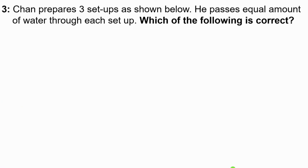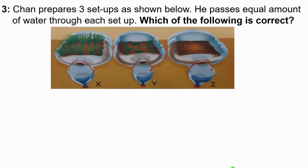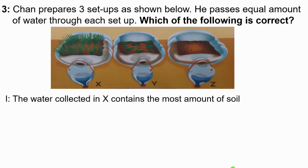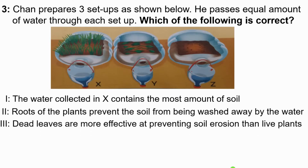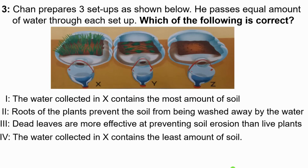Question 3: Chan prepares three setups as shown below, then he passes equal amount of water through each setup. The question asks which of the following is correct. Hint 1: the water collected in this contains the most amount of soil. Hint 2: roots of plants prevent the soil from being washed away by water. Hint 3: dead leaves are more effective at preventing soil erosion than live plants. And hint 4: the water collected in this contains the least amount of soil.